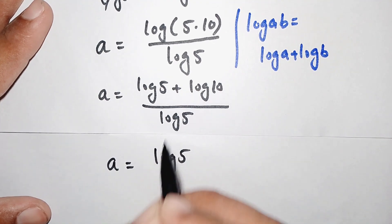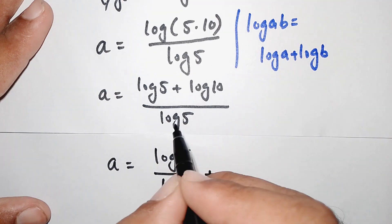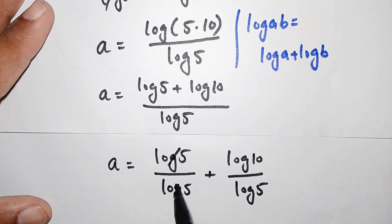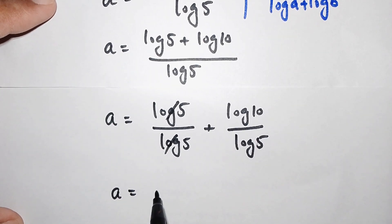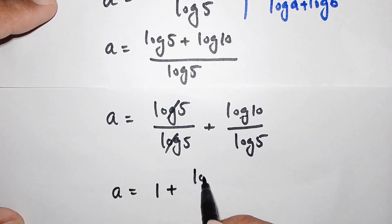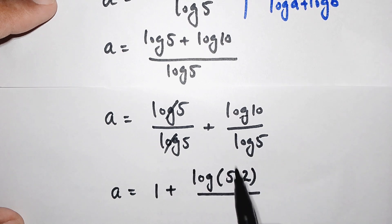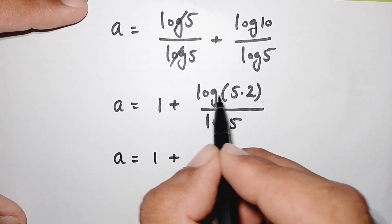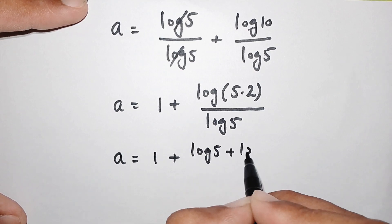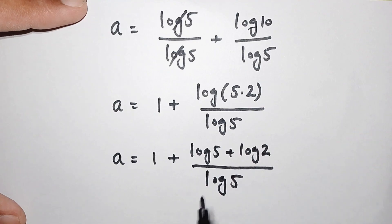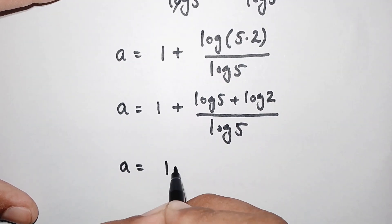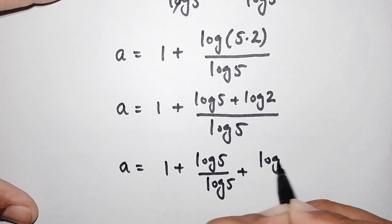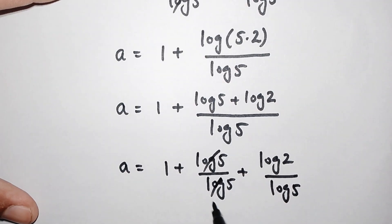This log of 5 cancels with the denominator's log of 5, giving a equals 1 plus log of 10 divided by log of 5. Now log of 10 can be written as log of 5 times 2, so applying the product rule again: log of 5 plus log of 2, all divided by log of 5.